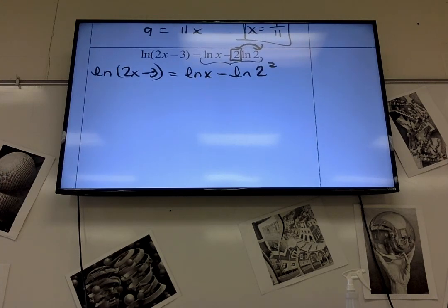So I would subtract those and change that from subtraction to division. So it's the natural log of x over 2 squared, which is 4. Natural logs of two things are equal, so what you're taking the natural log of are equal.